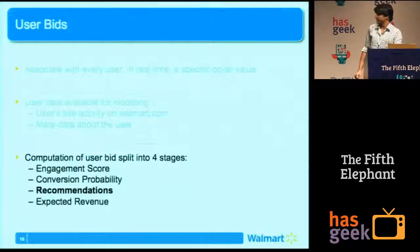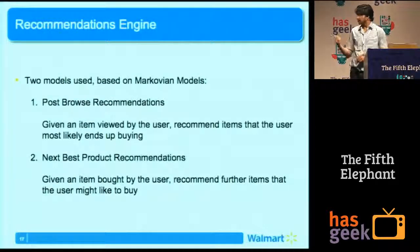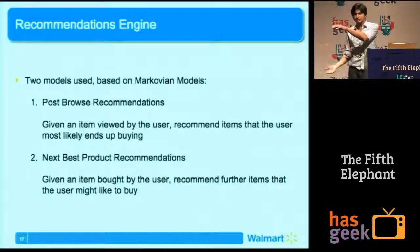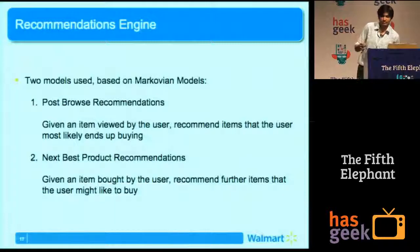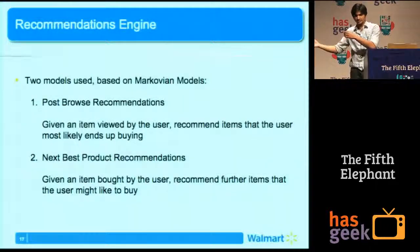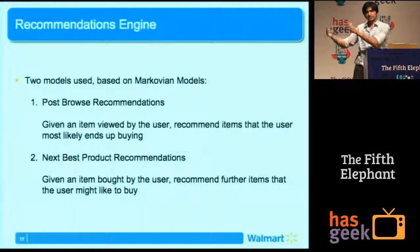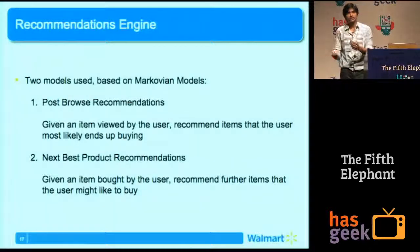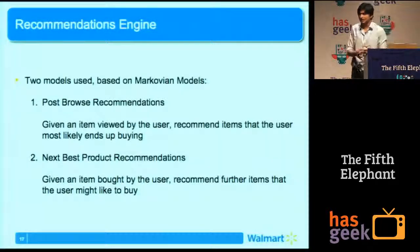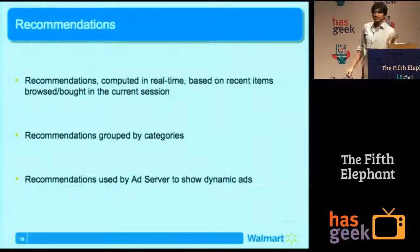Now, the next part is recommendations. You're not only bidding for the user, you also have to show him some ad — so we need a recommendations engine. We have two models, which are essentially Markovian models. One is browse recommendations: if he's viewed these items, he is most likely to end up buying one of these items. For example, if you're viewing tablets, we might show you the top-selling tablet similar to what you were viewing. The second model is next best product: if you've bought a tablet, you're not going to buy another similar tablet — you'll buy accessories like a charger or case. We combine both models and in real time, as a user browses Walmart.com, we keep updating his recommendations.